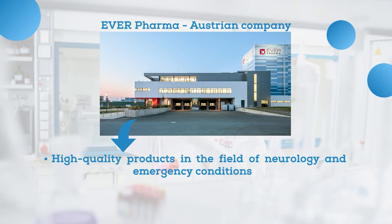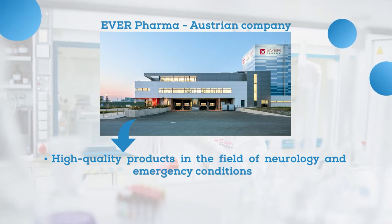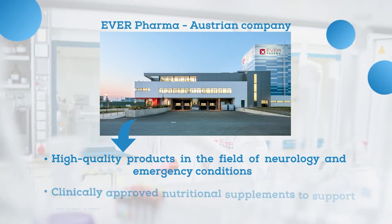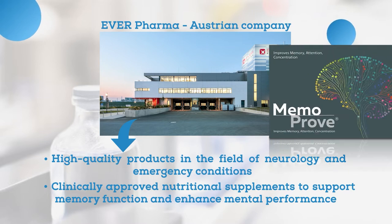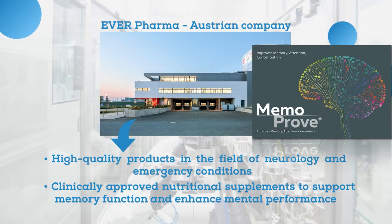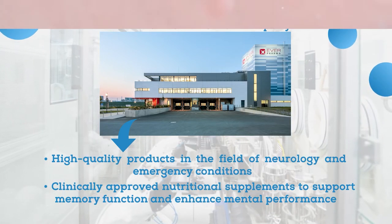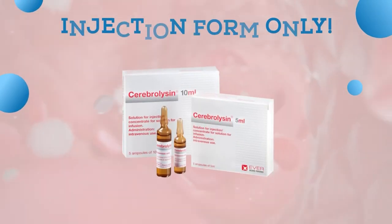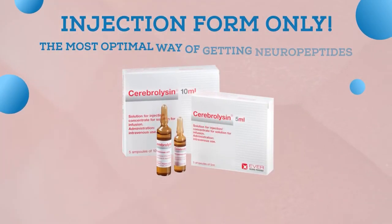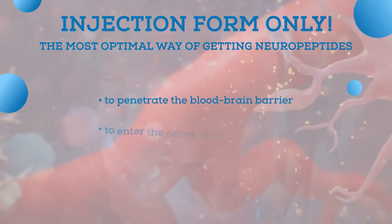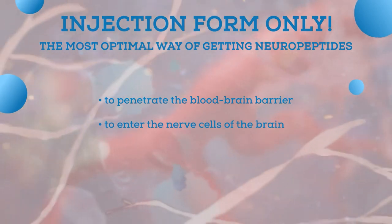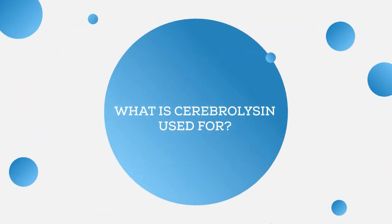Ever Pharma specializes in manufacturing high-quality products in the field of neurology and emergency conditions. It also provides clinically approved nutritional supplements to support memory function and enhance mental performance — for example, MemoProve, which we will talk about later. Cerebrolysin by Ever Pharma comes in injection form only, because it is the most optimal way of getting the neuropeptides to penetrate the blood-brain barrier and enter the nerve cells of the brain.